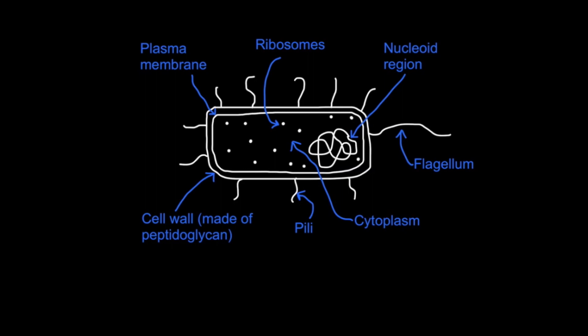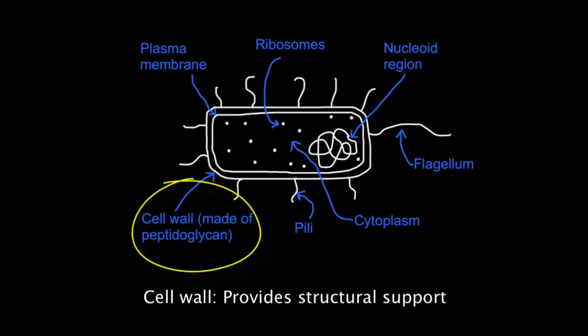Prokaryotes have a simple cellular structure. They have a plasma membrane which controls what enters and exits the cell. They have a cell wall, and in the case of prokaryotes that's made of peptidoglycan.